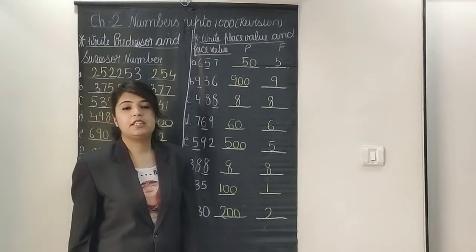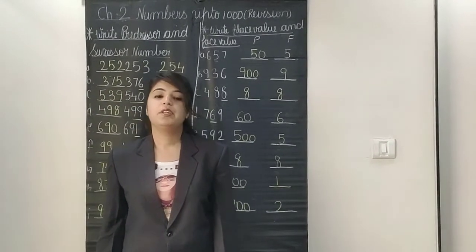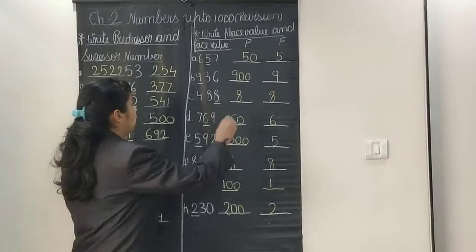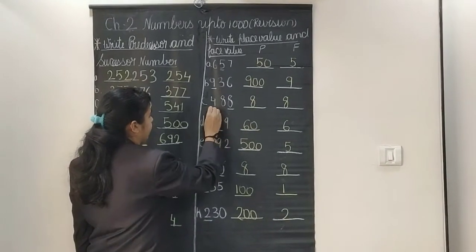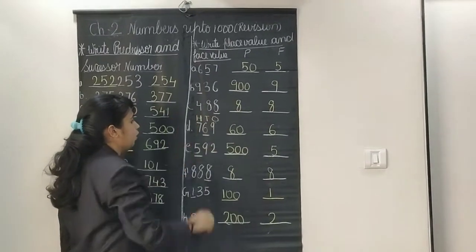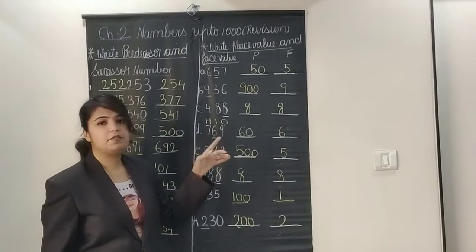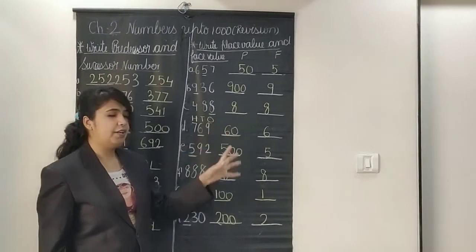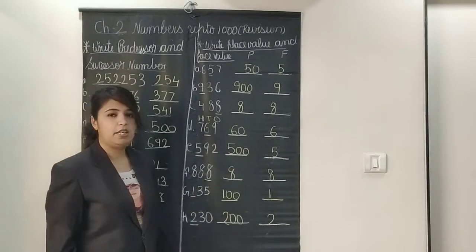Always make it clear — don't confuse between place value and face value. Place value shows the place of the digit. For example, in 769 we use H T O — hundreds, tens, ones — to identify the place. If you have any doubt, write down H T O and then write the place value. Face value simply means the same digit or same number.